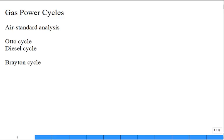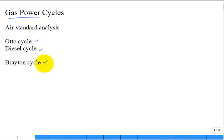This chapter deals with gas power cycles and is very long — most of the material we skip. The three things you need to cover are the Otto cycle, the Diesel cycle, and the Brayton cycle. All three use what they call air standard analysis, and today we need to cover the Brayton cycle.